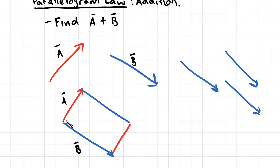And then to find the summation of these two vectors, what we have to do is we have to join the corners of the parallelogram like so. Now this is vector A plus vector B. This line here is also known as a resultant of these two vectors.